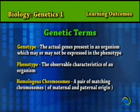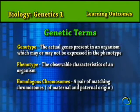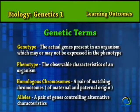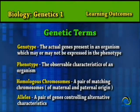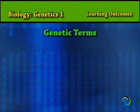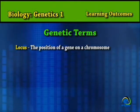Homologous chromosomes — a pair of matching chromosomes of maternal and paternal origin. Alleles — a pair of genes controlling alternative characteristics. Locus — the position of a gene on a chromosome.